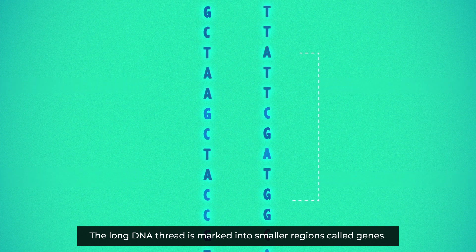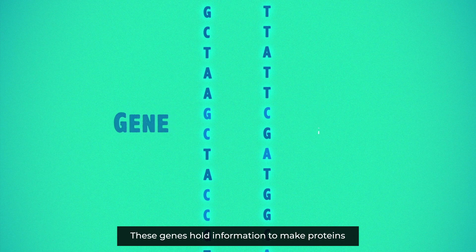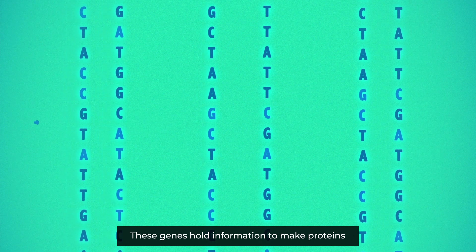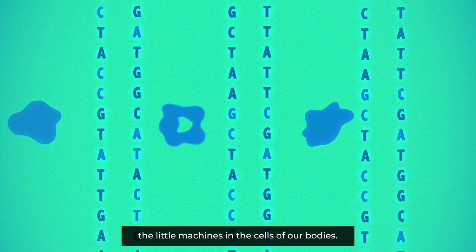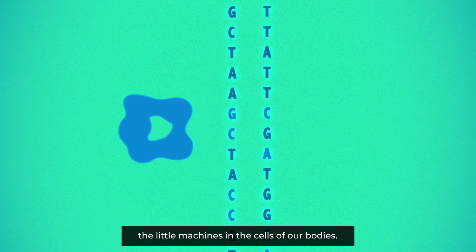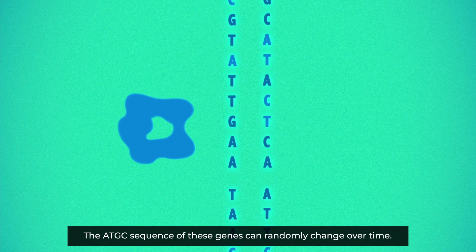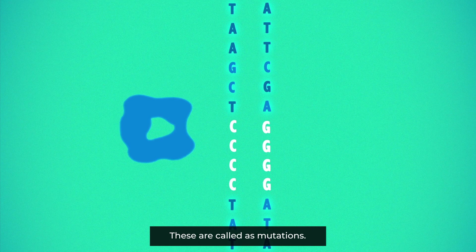The long DNA thread is marked into smaller regions called genes. These genes hold information to make proteins — the little machines in the cells of our bodies. The A, T, G, C sequence of these genes can randomly change over time. These are called mutations.